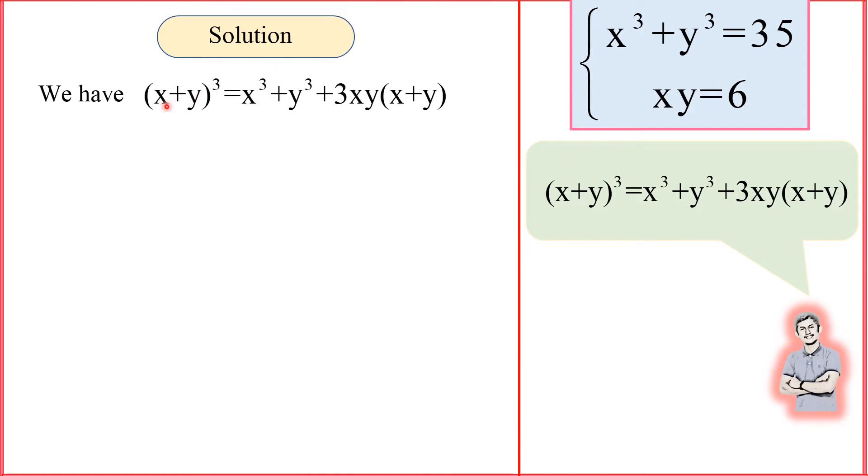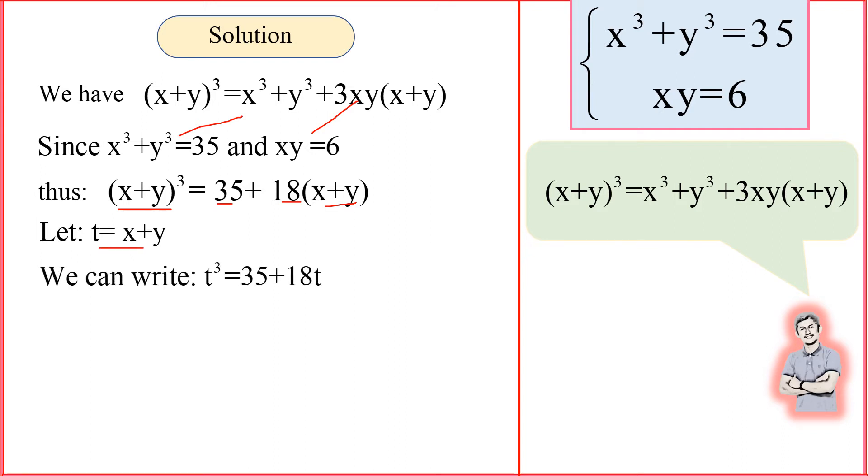Since we know that (x+y)³ equals that, that's pretty simple. And I know that x³ + y³ = 35 and xy = 6. So I just substitute the values into the formula that I wrote. Technically, it's simple, right? So, in order to make it easy, I let t = x+y. After that, I can substitute t into there. So I got t³ = 35 + 18t.